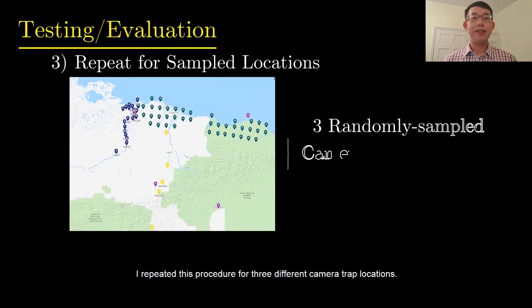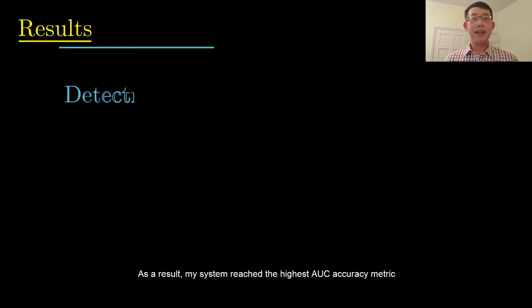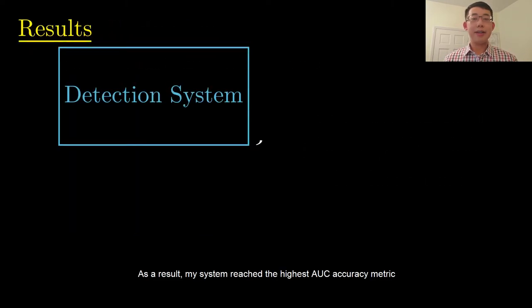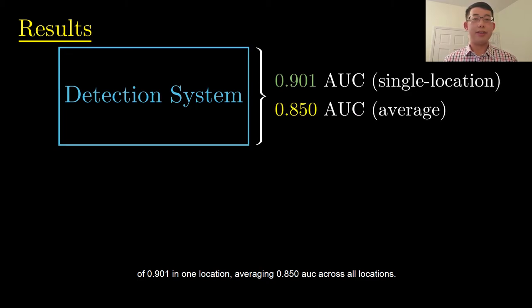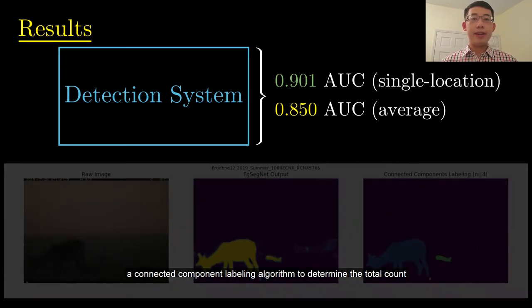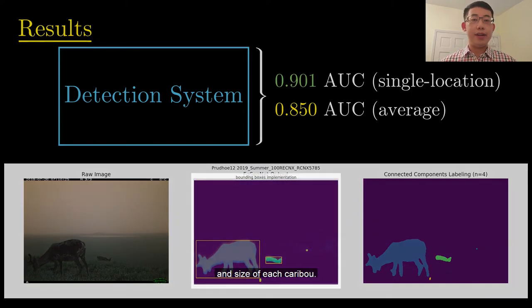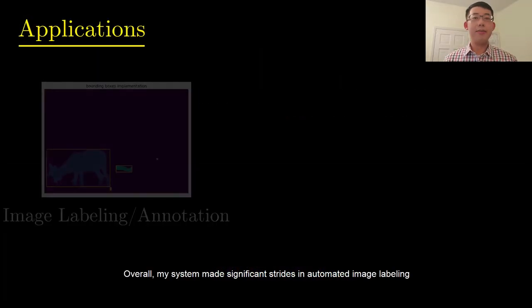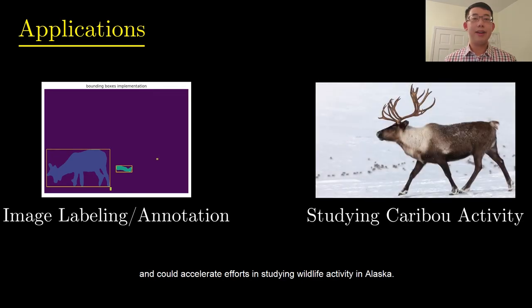I repeated this procedure for three different camera trap locations. As a result, my system reached the highest AUC accuracy metric of 0.901 in one location, averaging 0.850 AUC across all locations. For the images predicted by the system to have caribou, I implemented a connected component labeling algorithm to determine the toe count and size of each caribou. Overall, my system made significant strides in automated image labeling and could accelerate efforts in studying wildlife activity in Alaska. Thank you very much for listening.